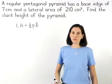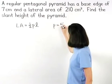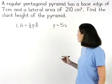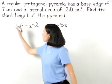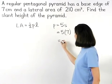So the formula for the perimeter of the base is five times the length of a side, or five times seven, which is 35.